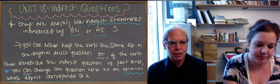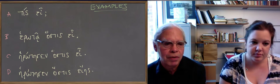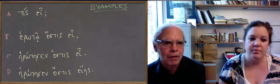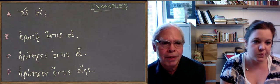We'll look at an example of how these things work, of what the options are. You've got a direct question: tis ei? which means 'who are you?'